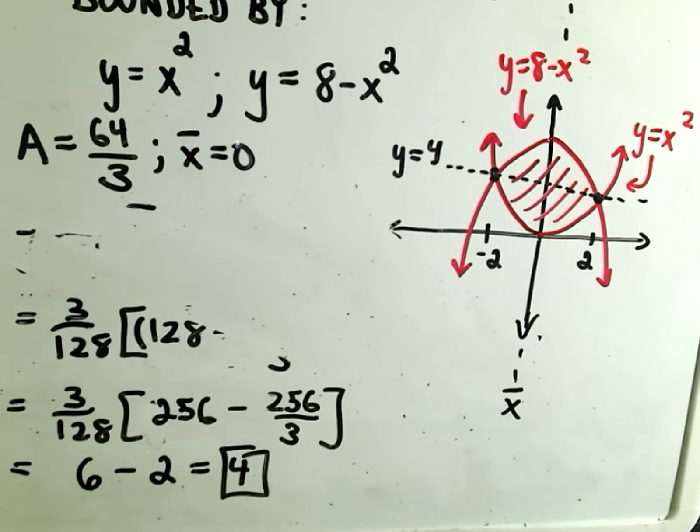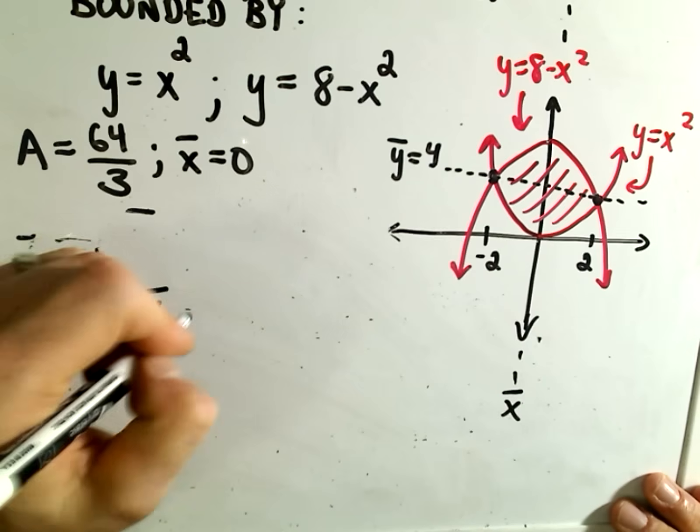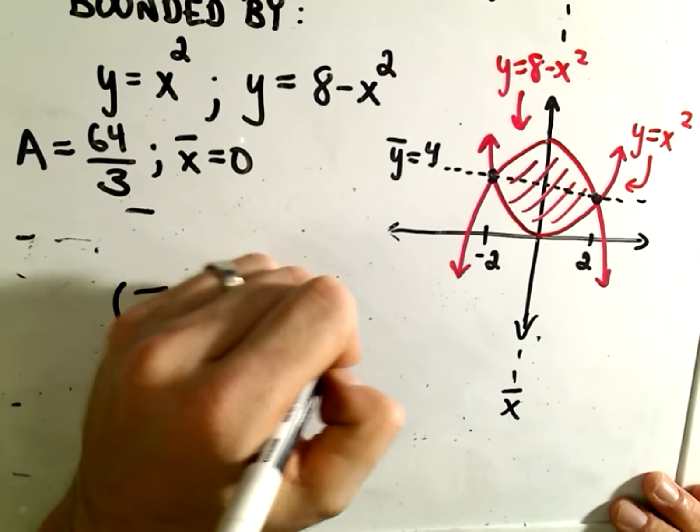It looks like x-bar should be the y-axis, and our y-bar value should be 4. So in conclusion, our centroid (x-bar, y-bar) is going to be the point (0, 4).